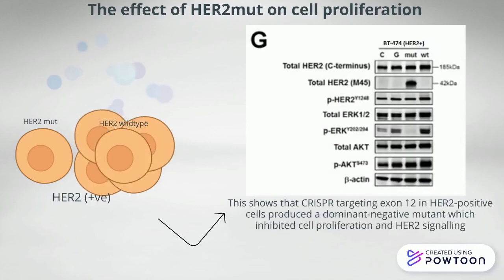Total HER2 protein levels and its phosphorylation at Y1248 remained unchanged. This shows that CRISPR targeting of exon 12 in HER2-positive cells produced a dominant negative mutant which inhibited cell proliferation and HER2 signaling.